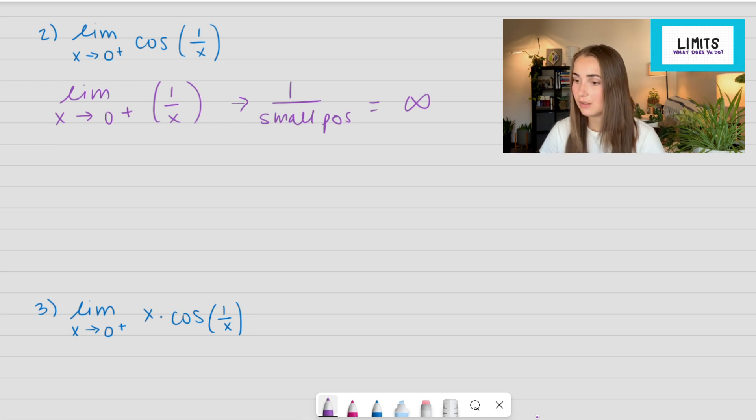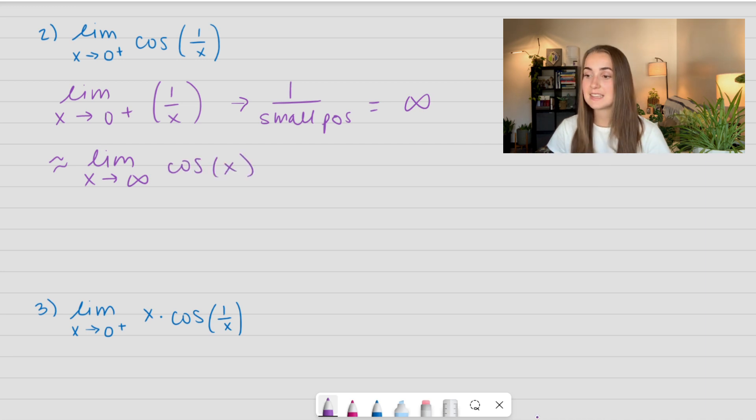So this is very similar to the limit as x goes to infinity of cosine of x, because that inside is going to infinity. And like we talked about earlier, this does not exist, which means I can fill that in for the actual limit. We have the limit as x approaches 0 from the right side of this function does not exist.